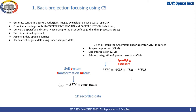The matrices associated with these linear operations are presented in this equation, and by multiplying these three matrices we obtain the system transformation matrix. Finally, the synthetic aperture radar image is simply obtained by multiplying the flattened version of the raw data with the system transformation matrix.